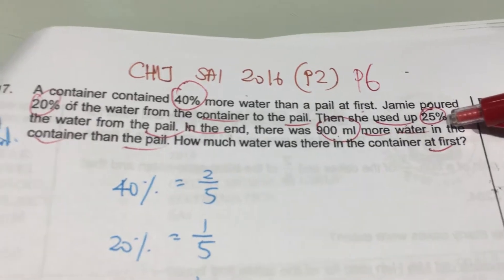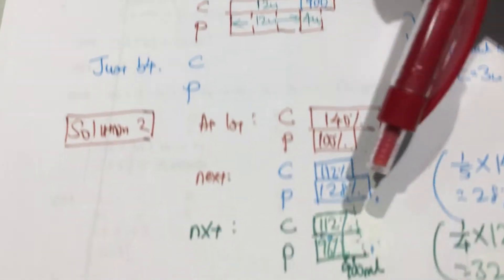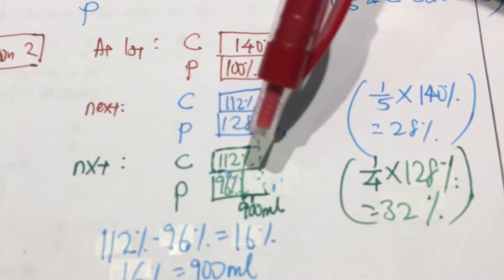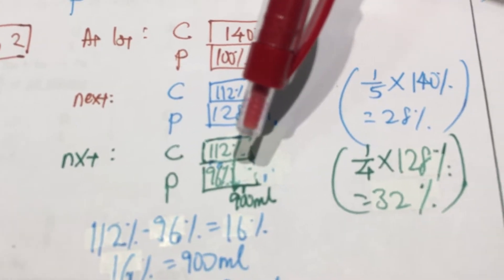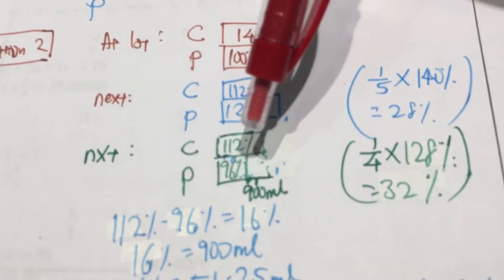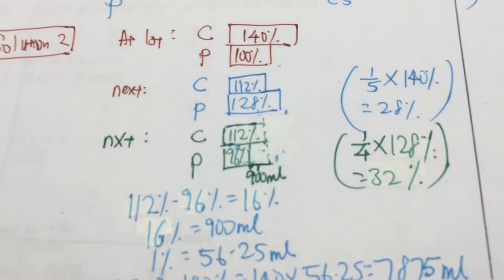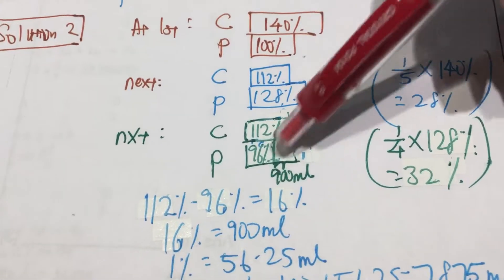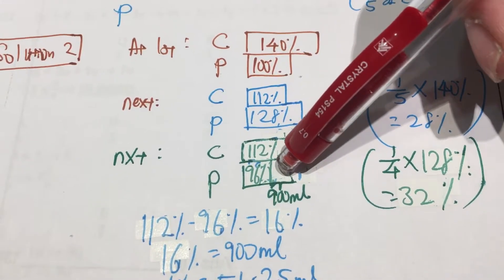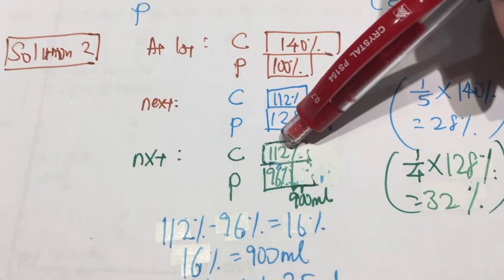Then she used up 25% of the water from P, meaning that what's left, which is 3 quarter of 128, which gives you 96%. And there's no change in the C.